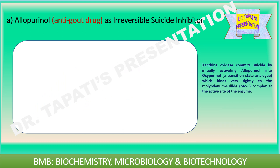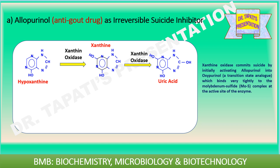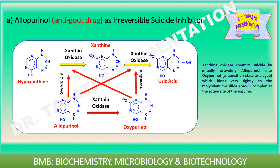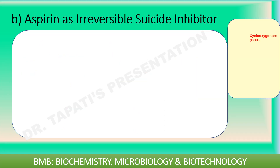Gout is a type of arthritis in which uric acid builds up in the joints. Uric acid is synthesized by xanthine oxidase from the substrates hypoxanthine and xanthine. Allopurinol is used to treat gout by reducing uric acid production through inhibition of xanthine oxidase. Xanthine oxidase commits suicide by initially converting allopurinol into oxypurinol, a transition state analog that binds very tightly to the molybdenum sulfide complex at the active site of xanthine oxidase, causing irreversible suicide inhibition.